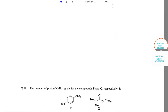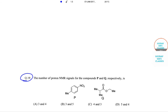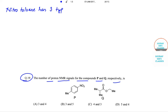The first question is question number 19. The question asks for the number of proton NMR signals from compound P and Q respectively. We will first draw the compounds. Nitrotoluene has three types — so para-nitrotoluene has three types of protons.